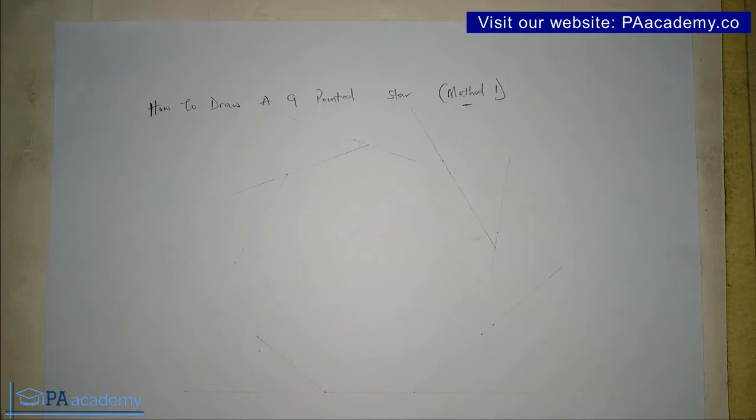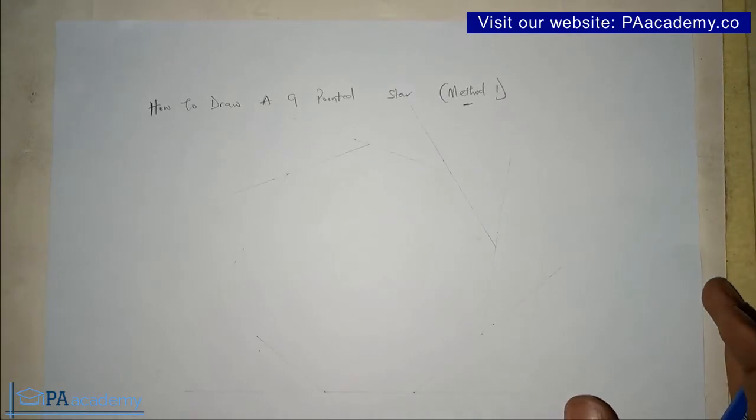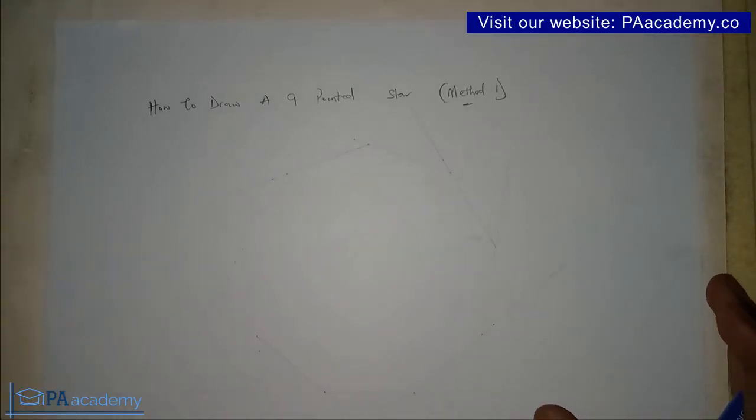Now for you to draw a nine-pointed star, one thing that you actually need is to draw a nonagon. A nonagon is a regular polygon with nine sides. If you look at what I'm having here, you'll see that I'm having a nonagon, but the nonagon is very faint. When you are drawing yours, also make sure that the lines are very faint.